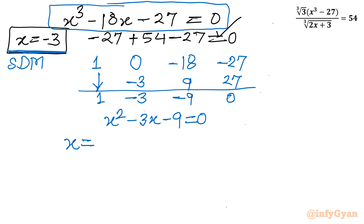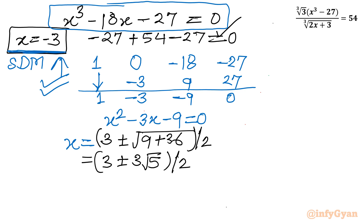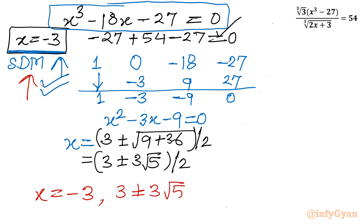Using the Sridharacharya (quadratic) formula on x² - 3x - 9 = 0: x = (-(-3) ± √((-3)² - 4(1)(-9))) / (2·1) = (3 ± √(9 + 36)) / 2 = (3 ± √45) / 2 = (3 ± 3√5) / 2. So there are two more real solutions. In total, there are 3 real solutions: x = -3, and x = (3 ± 3√5) / 2.